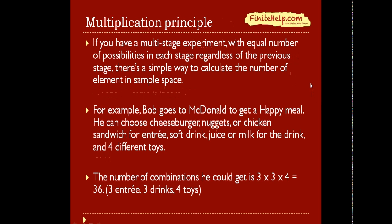If you have a multi-stage experiment with an equal number of possibilities in each stage regardless of the previous stage, there's a simple way to calculate the number of elements in the sample space. For example, let's say Bob goes to McDonald's to get a happy meal. He can choose cheeseburger, nugget, or chicken sandwich for the entree; soft drink, juice, or milk for the drink; and four different toys to choose from. To figure out how many happy meals he can possibly get in the sample space, you would simply multiply the possible outcomes from each stage. So there are three entrees, three drinks, and four toys. So the number of combinations he could get is simply three times three times four for a total of 36.